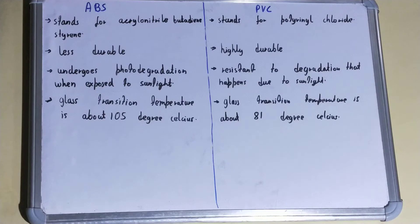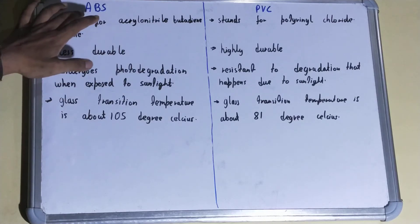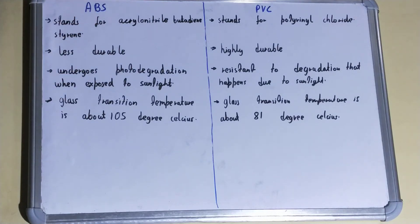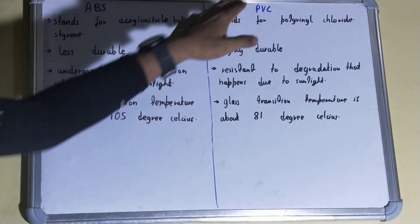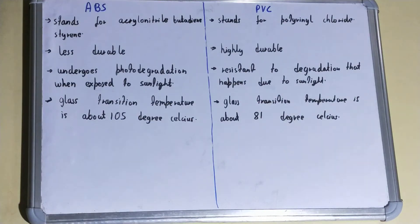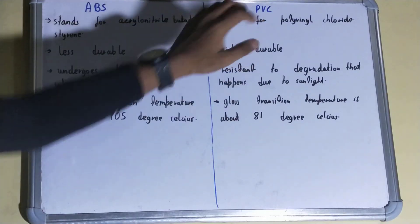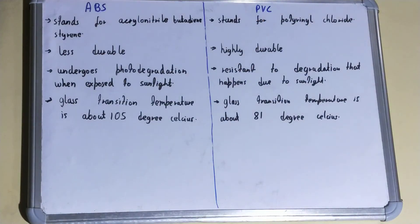ABS undergoes photo degradation when exposed to sunlight, so ABS products or parts kept in sunlight will get degraded. But in the case of PVC, there is resistance to degradation from sunlight — you can expose PVC to sunlight and it will not degrade.